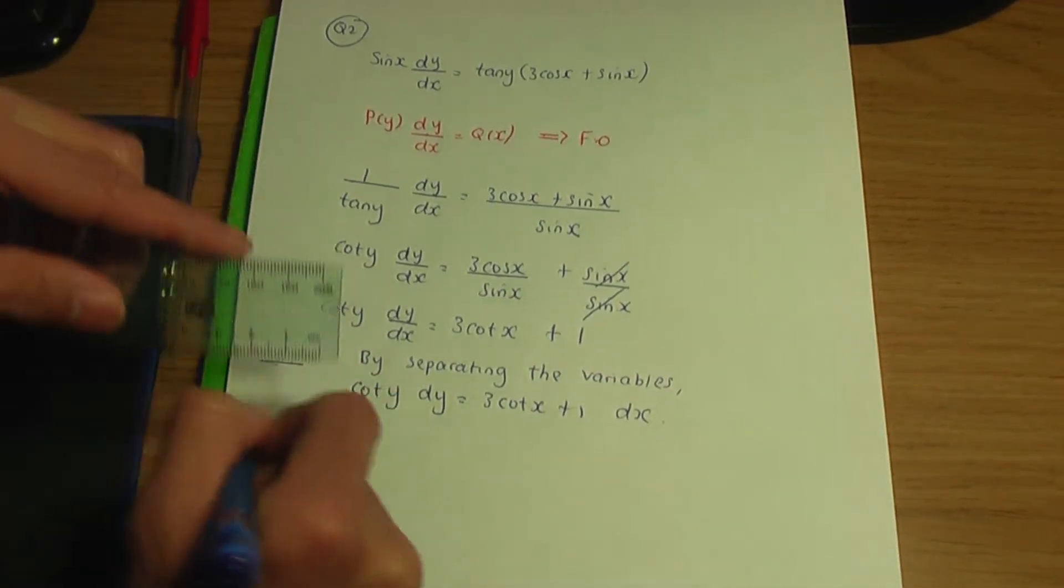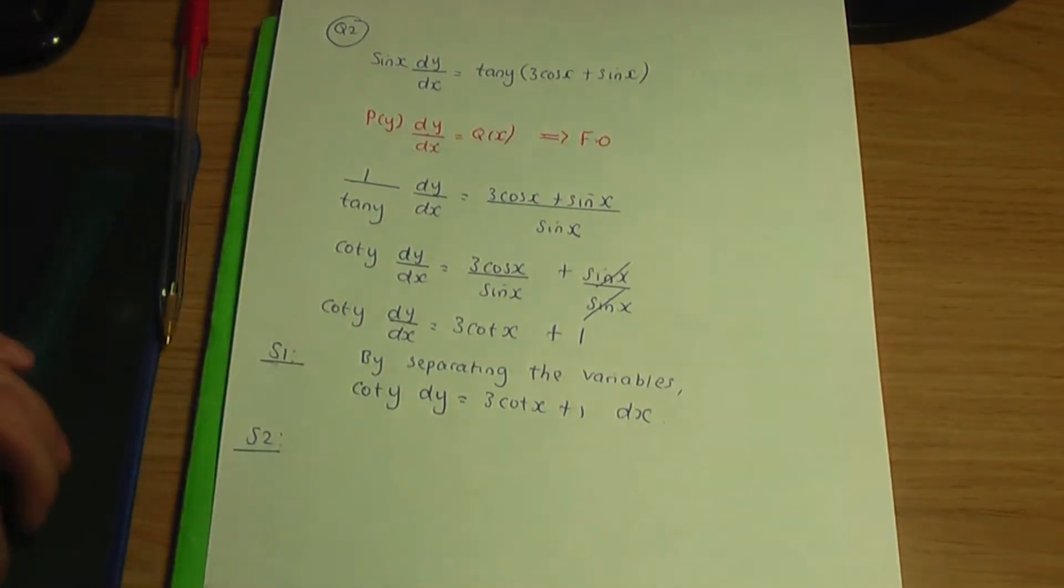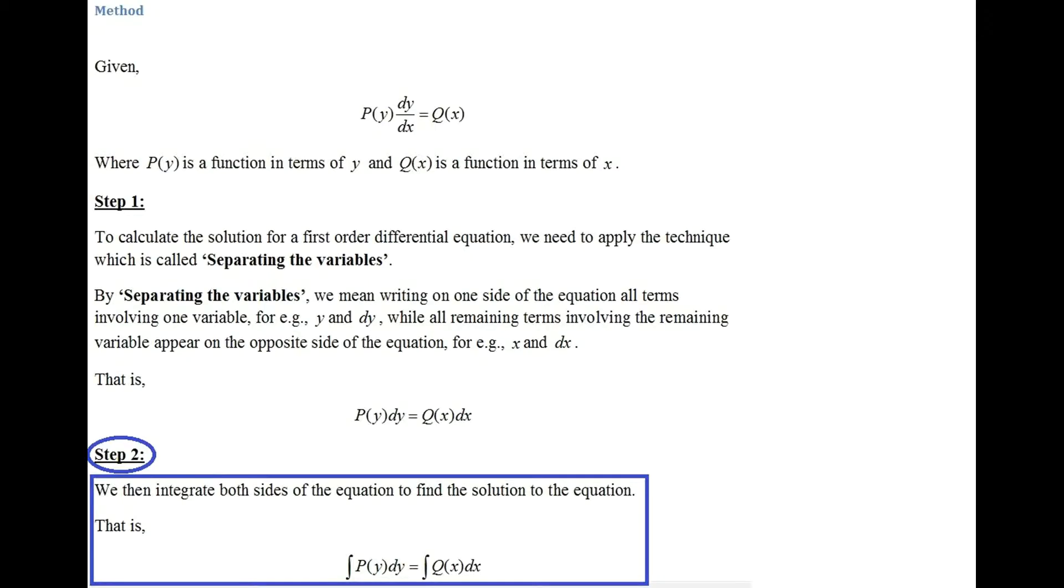Now let's go to the next step, step number two. Back to the screenshots. Step number two is we then integrate both sides of the equation to find the solution to the equation. So that is we need to integrate the left hand side and we need to integrate the right hand side terms. So back to the paper and pen.